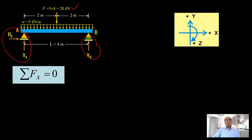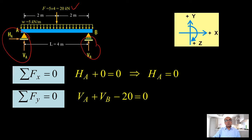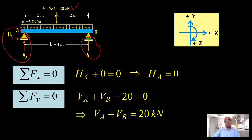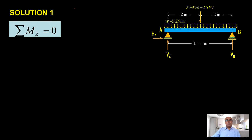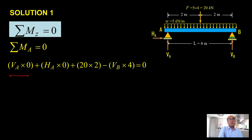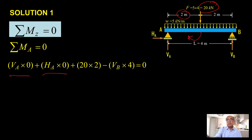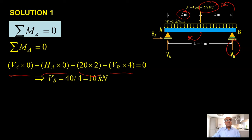Reactions are two reactions for the pin support and one reaction for the roller support. To find the total load, we simply multiply intensity by length: 5 times 4 equals 20 kilonewtons total load. Sign convention is the same. Summation of horizontal forces equal to zero — no horizontal force, so HA equals zero. Summation of vertical forces equal to zero: VA plus VB minus 20 equals zero, so VA plus VB equals 20 kilonewtons. For moment at A: VA times 0 and HA times 0 contribute nothing. The 20 kilonewton total force, at distance 2 meters from A, creates a clockwise moment — positive. VB times 4 creates an anticlockwise moment — negative. Simplifying gives VB equal to 10 kilonewtons.